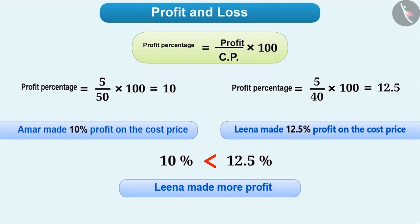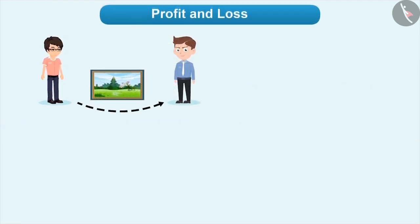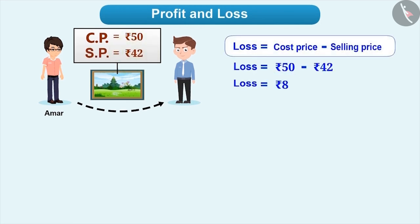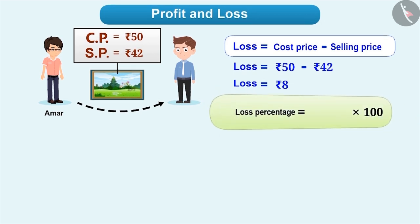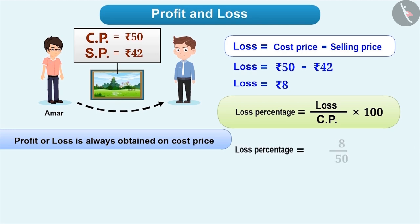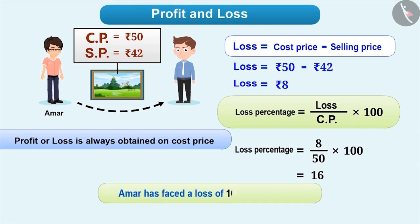Similarly, we can also represent loss as percentage. Suppose if Amar had sold the 50 rupee photo frame for 42 rupees, then he faces a loss of rupees 8. That means in this situation, Amar has faced a loss of rupees 8 on cost price of 50 rupees. To represent any fraction in percentage, we multiply it by 100. Therefore, loss percentage for Amar is equal to loss by cost price into 100. Remember that profit or loss is always obtained on cost price. So loss percentage for Amar is equal to 8 by 50 into 100, which is equal to 16. So he gets a 16% loss on his cost price.